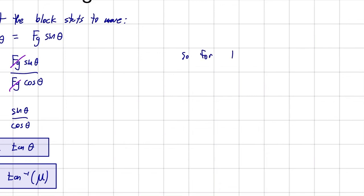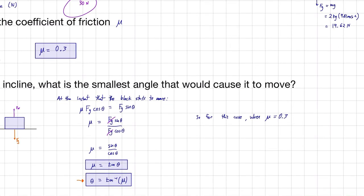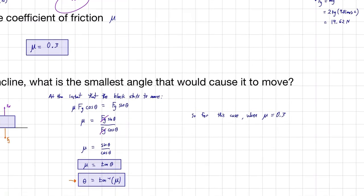So for this case, when mu is equal to 0.3 - again, we found that in the last step - when mu is equal to 0.3, theta is equal to tan inverse of 0.3, which will be equal to 16.6992.